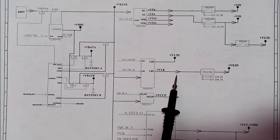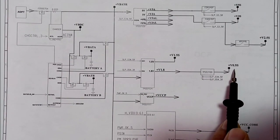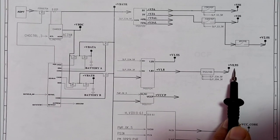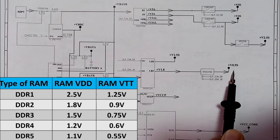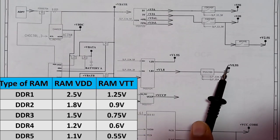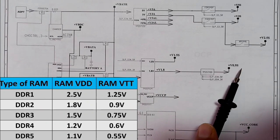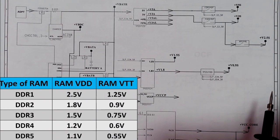The 1.8 volt for DDR2 RAM will be applied to another IC — TPS51 wind handler — and this IC generates half of that power: 0.9 volt. This voltage is also for the RAM; it's VTT for RAM terminals. The RAM basically has two voltages: one main voltage and one for terminals. For DDR2 that's 1.8 V and 0.9 V, for DDR3 it's 1.5 V and 0.75 V.